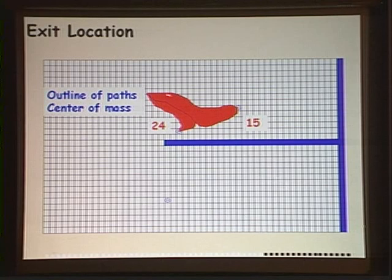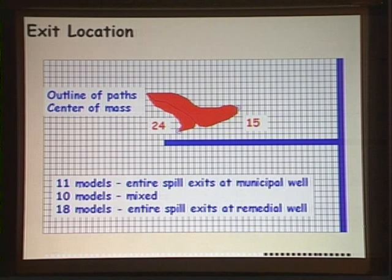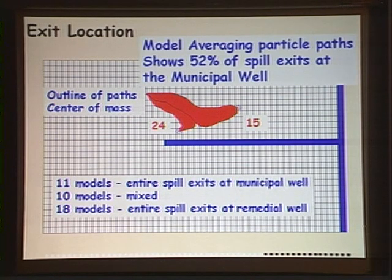We can even model average the exit location. Tracing the center of mass, 15 of them go to our municipal well — which we know is the truth — and 24 end up at the remedial well. In some models the plume splits between wells, sometimes going entirely to one. Multi-model averaging the paths gives a 52 percent chance the spill will exit at the municipal well. Now we've been honest with our community: there's a 52 percent chance the spill ends up at the municipal well, and they can decide how to proceed.